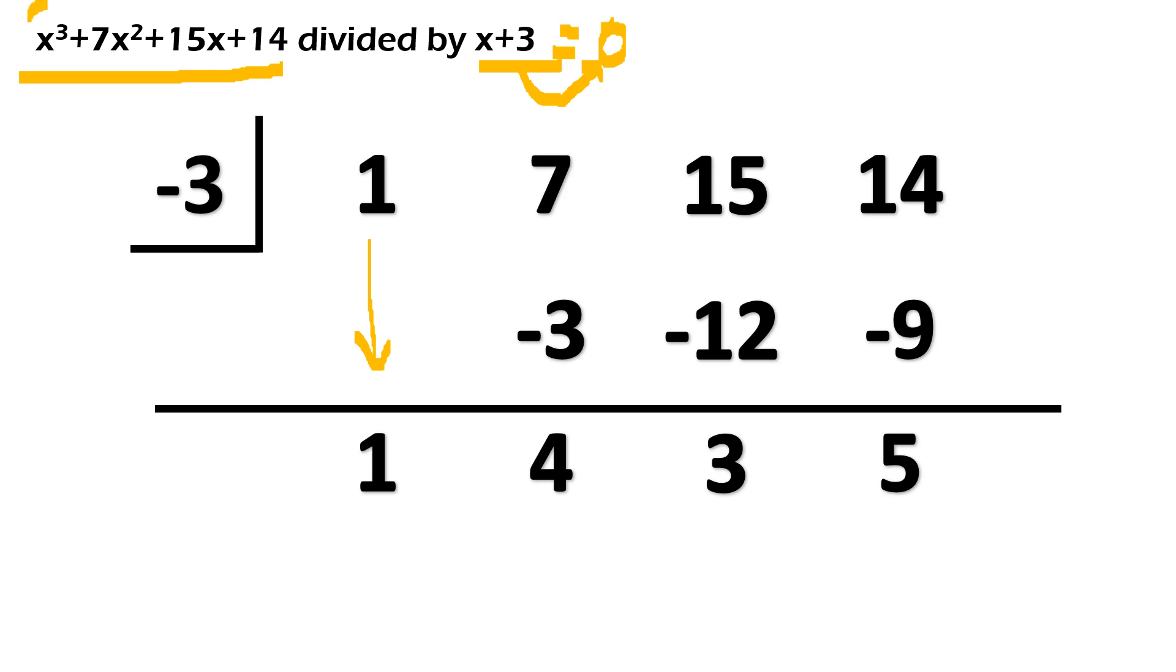So, kung nagsimula tayo sa X cube, dito sa ating final answer, magsisimula tayo sa X squared. Babawasan nyo ng isang degree. So, ito ay X squared. Ito ay X. Ito yung constant. At yung 5 is our remainder. So, final answer natin, X squared plus 4X plus 3 with the remainder 5 over X plus 3, which is our divisor.